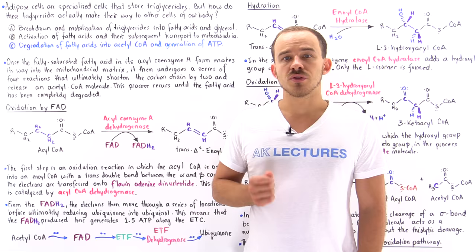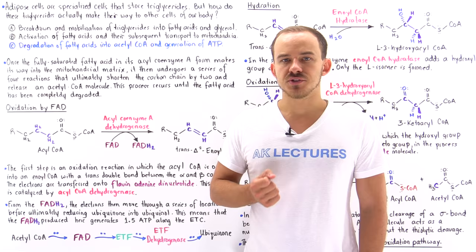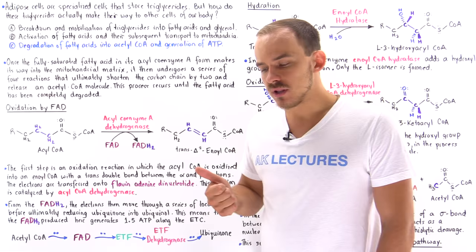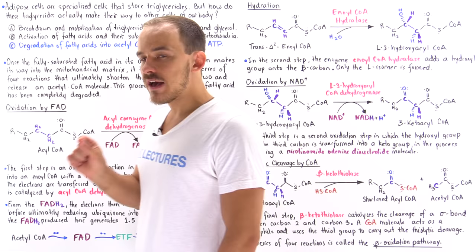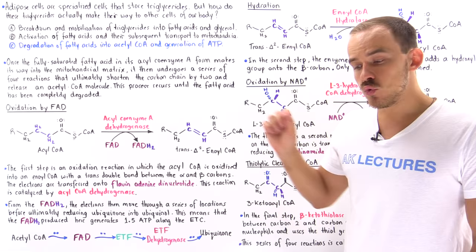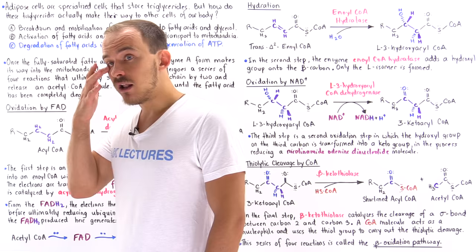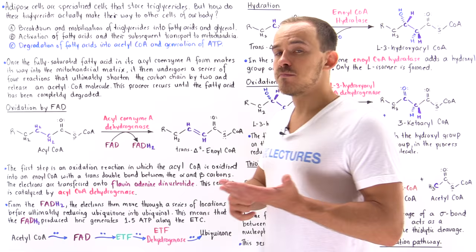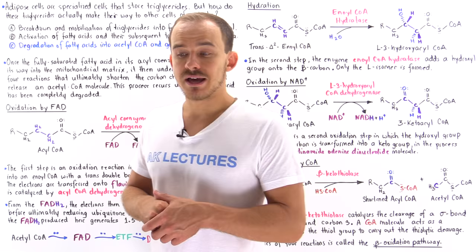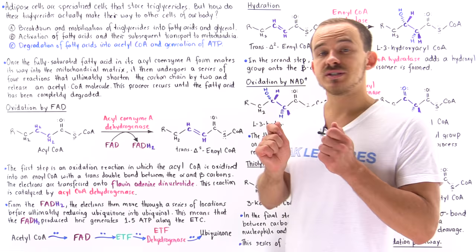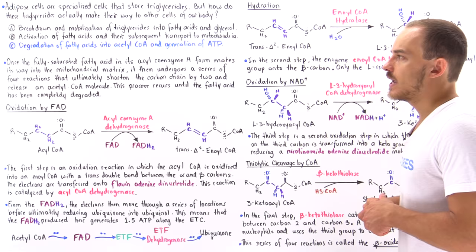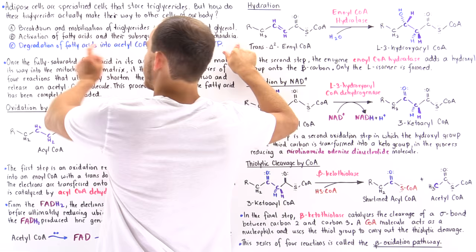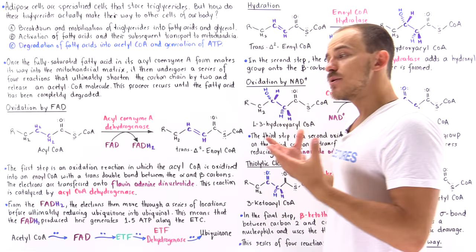In order for the cells of our body to use the energy stored within the chemical bonds of triglyceride molecules, three things must take place. First, triglycerides must be broken down and mobilized into fatty acids within fat cells, then travel into the bloodstream and into the cytoplasm of the target cell. Second, the fatty acid must be activated and transported into the matrix of the mitochondria. Third, the fatty acid must be broken down into acetyl coenzyme A molecules — and this is the focus of this lecture.